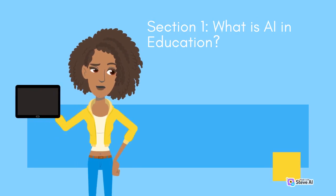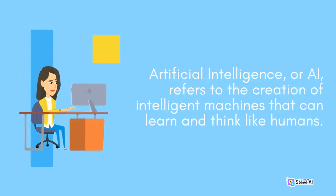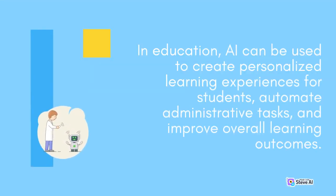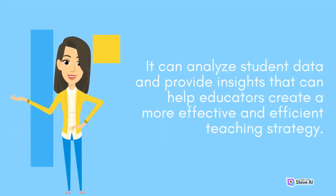Section 1: What is AI in Education? Artificial Intelligence, or AI, refers to the creation of intelligent machines that can learn and think like humans. In education, AI can be used to create personalized learning experiences for students, automate administrative tasks, and improve overall learning outcomes. It can analyze student data and provide insights that can help educators create a more effective and efficient teaching strategy.